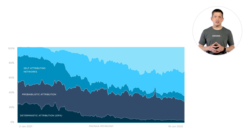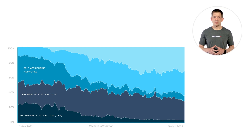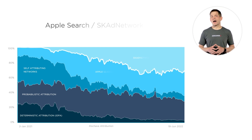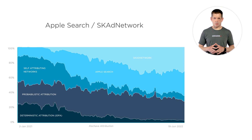These include the big owned and operating networks like Google, Facebook, Twitter, and others. Then we have Apple Search and the SK Ad Network.